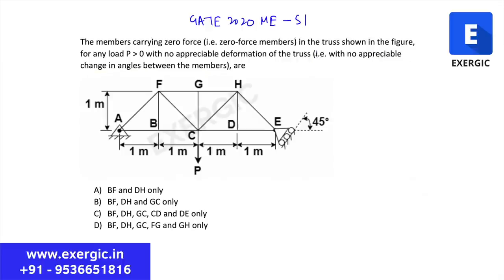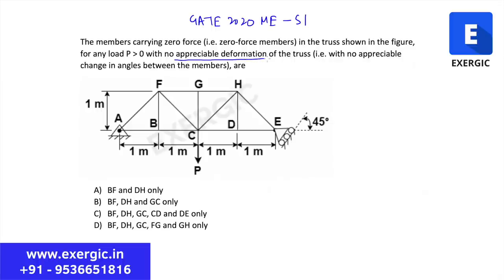In general, be very careful — GATE is not going to explain these things to you every time. No appreciable deformation of the truss means there is no change in the angle between members after applying load P. All angles you calculate from geometry remain the same even after applying the load. This clarification in brackets will not be mentioned every time, so you should be aware of this concept.